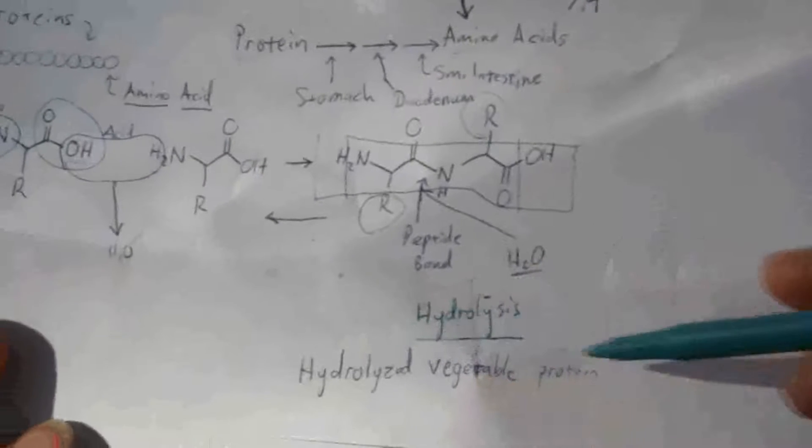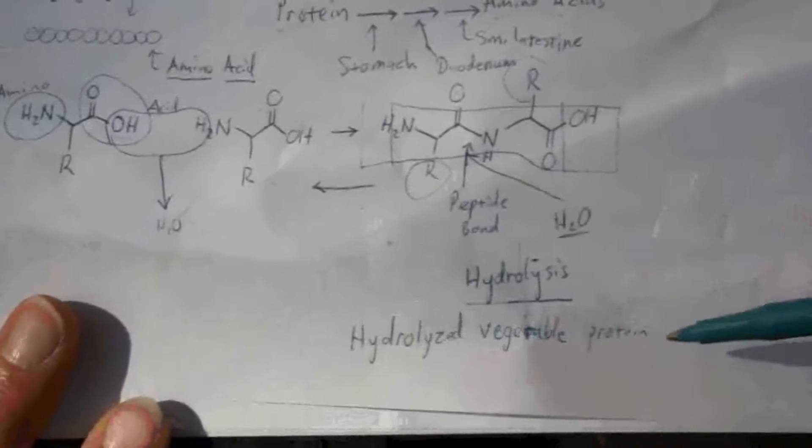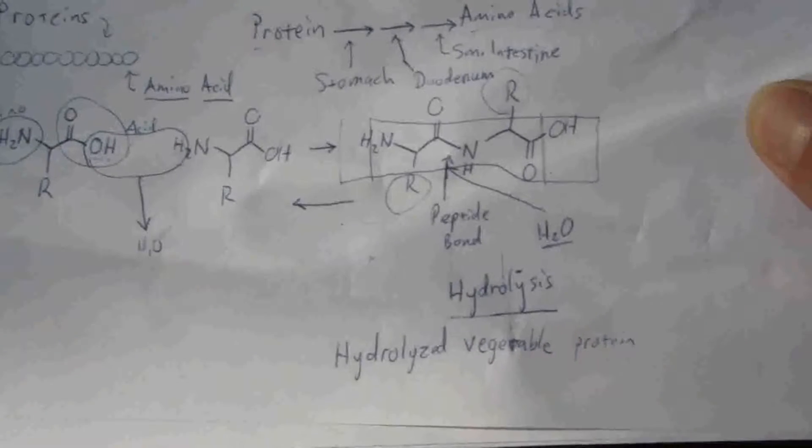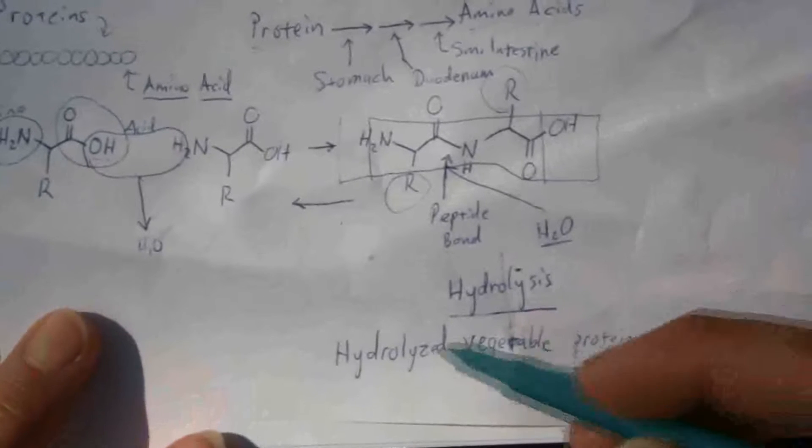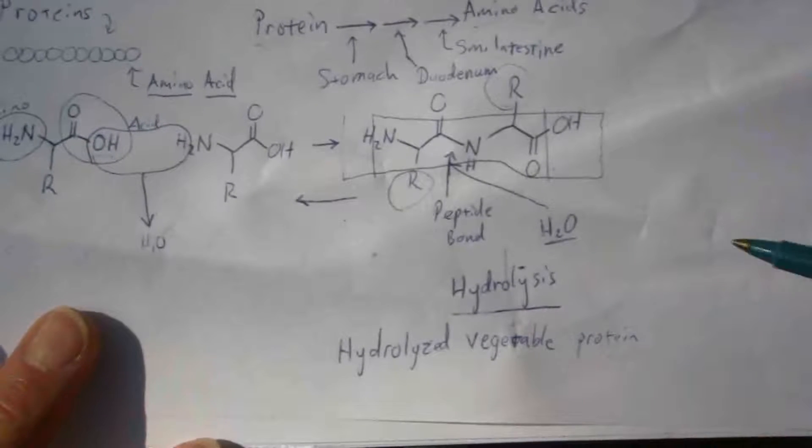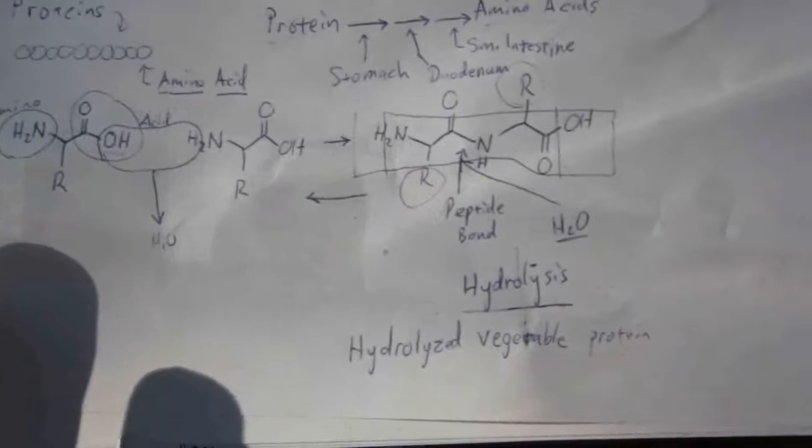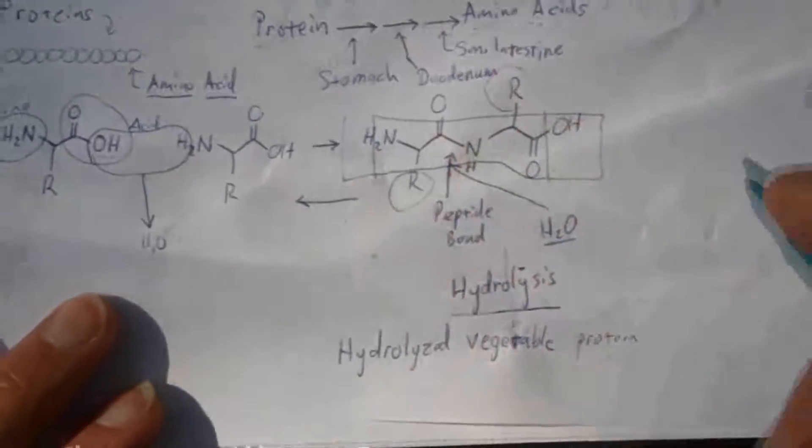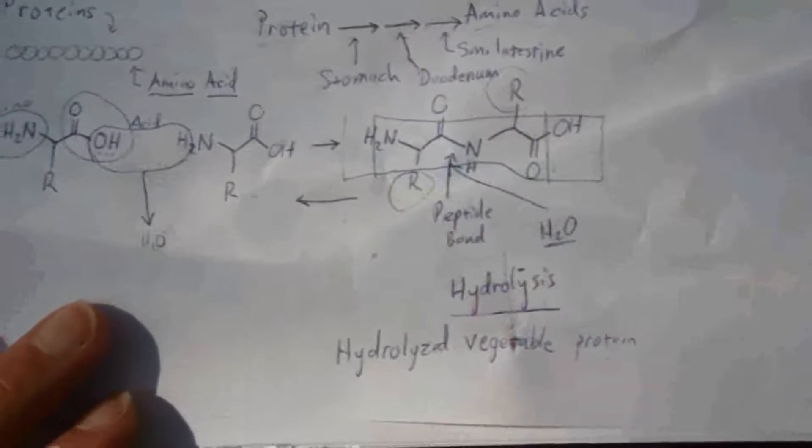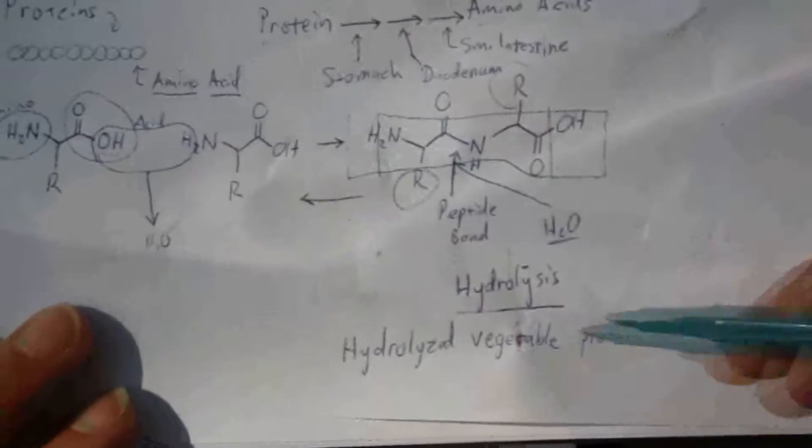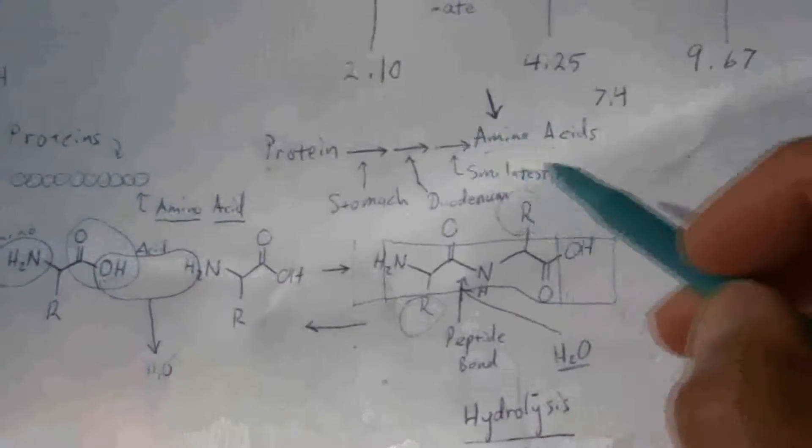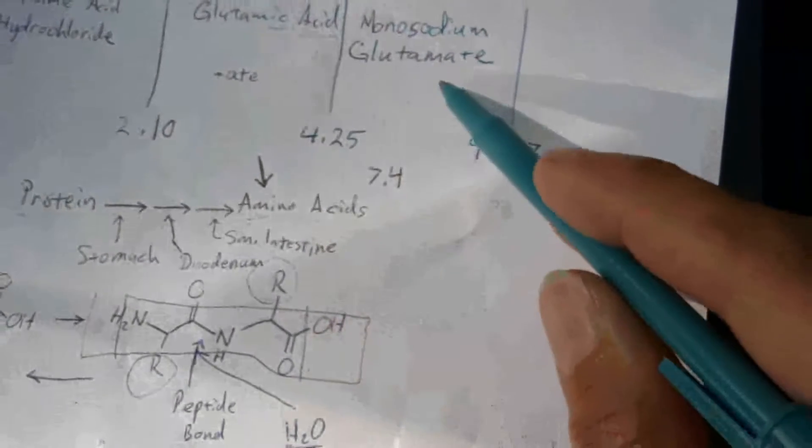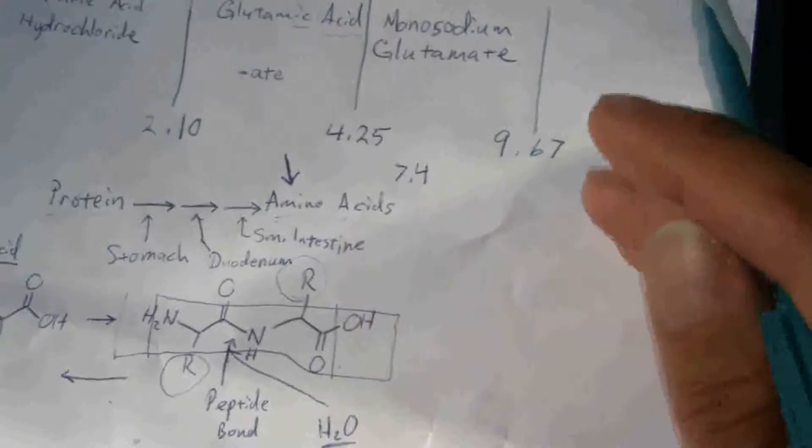Same thing, different name. Hydrolyzed vegetable protein, hydrolyzed soy protein, or you might see it might say soy protein isolate or something like that. They're all the same thing. They're saying they took that soy protein, isolated, in other words they broke it down, and they isolated the amino acids or something. It's all the same stuff. A mixture of amino acids, which will include your glutamic acid, which becomes monosodium glutamate in your body.